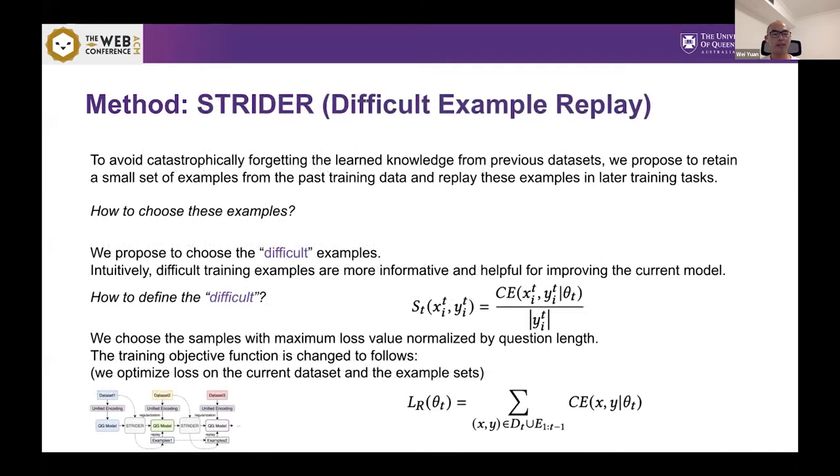The third part of our method is STRIDER. STRIDER has two components, difficult example replay and similarity regularization. The idea of difficult example replay is that we can retain a small set of samples from past training data and replay them in later training tasks so that we can alleviate forgetting. The key thing here is how to choose these examples. We decide to choose difficult examples because we think difficult training examples are more informative and helpful for improving the current model because this model doesn't know where in this difficult example in current datasets so maybe in the future they will first forget these examples.